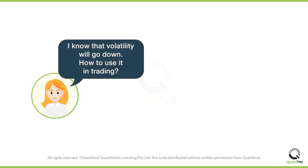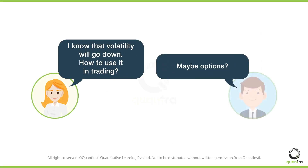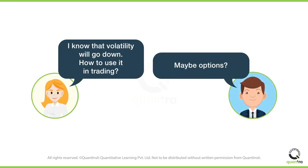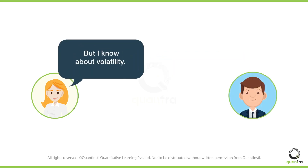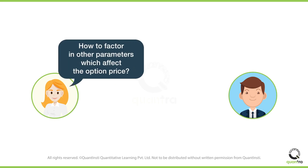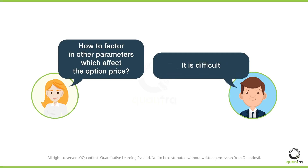But how to trade volatility? Maybe she can use options. But then Sophie knows about volatility, whereas in options, you have to factor in parameters such as delta, gamma, and theta, which affect the option's price.